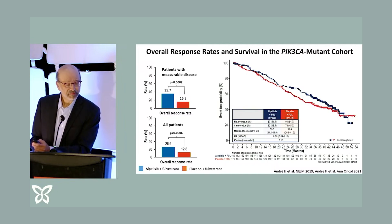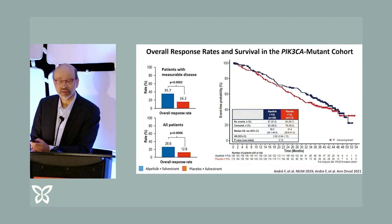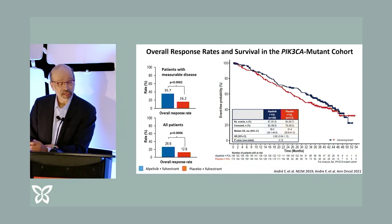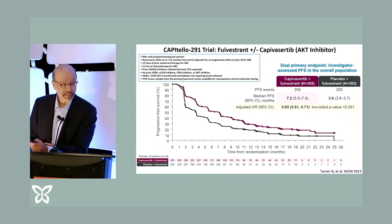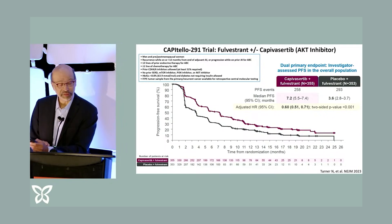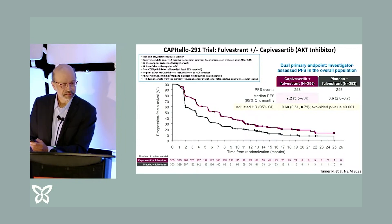One example is a drug called alpelisib that makes a meaningful difference in how patients do if they have a PI3 kinase mutation, and this led to the approval of that drug. Now there are some newer drugs that may work even better against PI3 kinase. One of those newer drugs is capivasertib, which was just recently approved in December and shows an improvement in patients who have genetic abnormalities in that pathway, again underscoring the need to test that pathway.